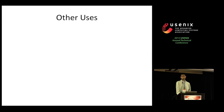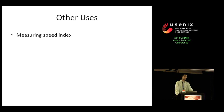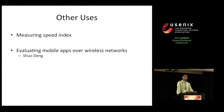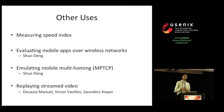MahiMahi has also been used in several other case studies described in the paper. We used it to evaluate multiplexing protocols on a new metric called speed index, proposed by Google, which measures the visual progress of a web page load — and we found similar trends to those seen with page load times. It's also been used to evaluate both mobile apps and multi-homing protocols like MPTCP over wireless networks. Lastly, MahiMahi has been extended to handle recording and replaying streamed video.